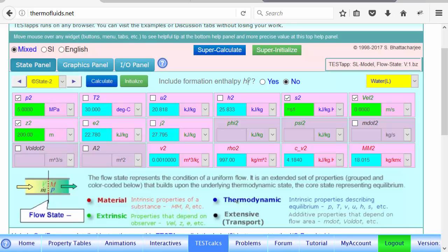This is a very simple way of calculating properties using the flow state TestCalc. The blue properties are the thermodynamic properties that define the core properties of the state. And then we add different layers. The extrinsic properties come because of the observer's dependent properties such as height or elevation or velocity of the flow. And then the material properties are found as soon as you select a material, and they don't depend on the equilibrium, just on the identity of the material.